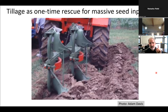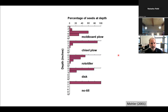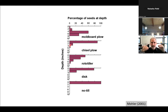Tillage can be a one-time rescue for a massive seed input. But a moldboard plow's turning action is not just in one direction — most seeds get put about six inches deep, but it also kicks some back up to the surface. A chisel plow sends most seeds to the surface with some going deeper. These tools mix soil so that seeds you send down can actually come back up. If you have a particularly large seed rain, you can deal with it by sending seeds into deep storage, but it's not a permanent fix.